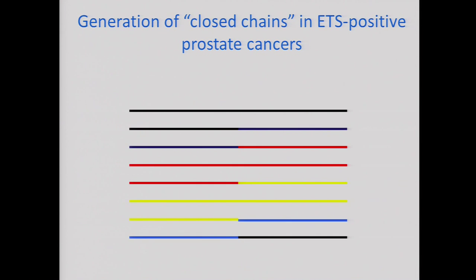If that happens, you get what we called closed chains: A goes to B, B goes to C, C goes to D, and D goes back to A. So it's a closed chain — not circular, but a propagation event of errors that comes back to where it started. This is basically what we were seeing in some of the prostate cancers.